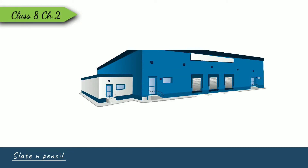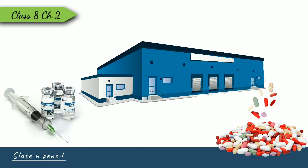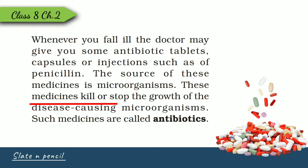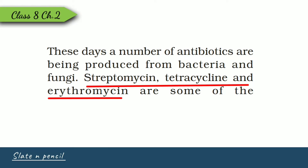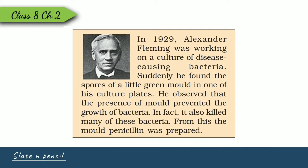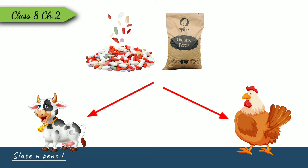The pharmaceutical industry also uses microorganisms to manufacture antibiotics and vaccines. Antibiotics are medicines which kill or stop the growth of disease-causing microorganisms, that is, pathogens. Commonly used antibiotics derived from bacteria and fungi are streptomycin, tetracycline, and erythromycin. Alexander Fleming discovered penicillin in 1929 — the first antibiotic — while working on a culture of disease-causing bacteria. Nowadays, antibiotics are also mixed with the feed of livestock and poultry to check microbial infections in animals.